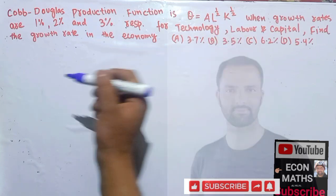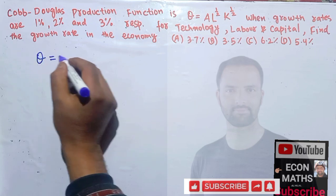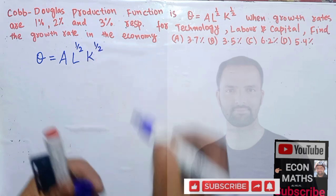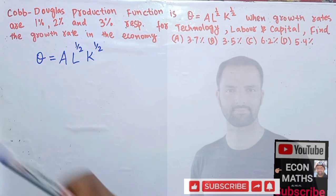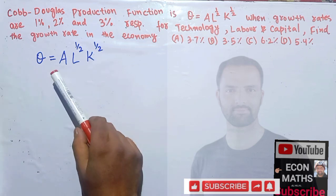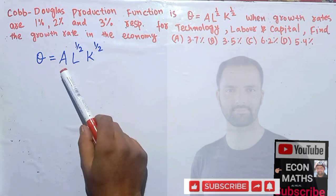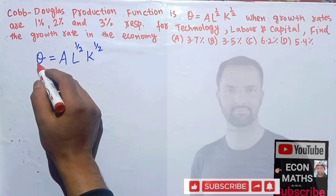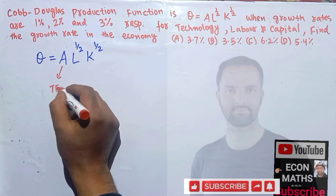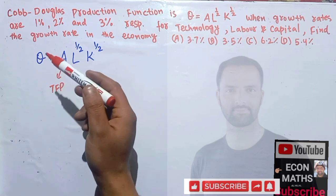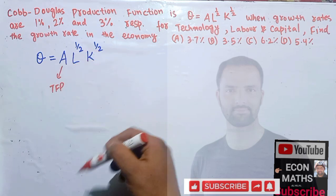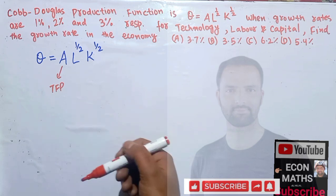Now let's try to interpret our Cobb-Douglas production function. We have Q is equal to A, L to the power 1/2, K to the power 1/2. Q denotes our total GDP or output. Our output is a function of A, that is the total factor productivity, L that is labor, and K is the capital. Total factor productivity denotes the change in our output which is not explained by labor and capital.